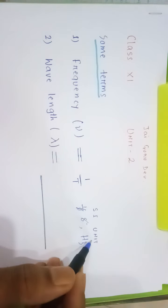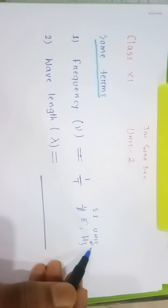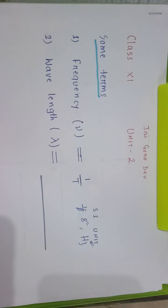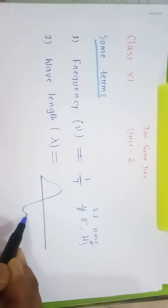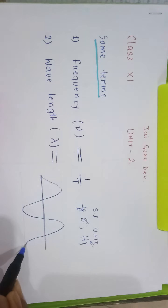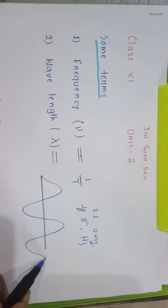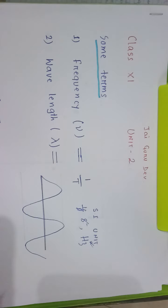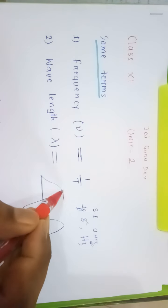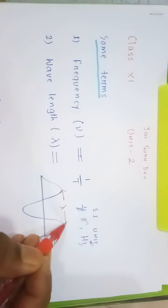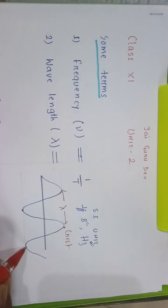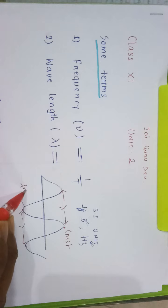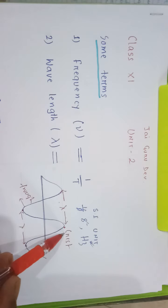Instead of second inverse we use the term Hertz for frequency. Next point is wavelength. If we draw a wave, wavelength is the distance between the top of the wave — the top is called the crest — or you can take the distance between two crests. The bottom of the wave is called the trough.